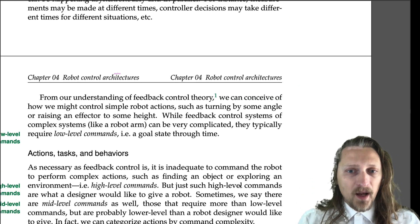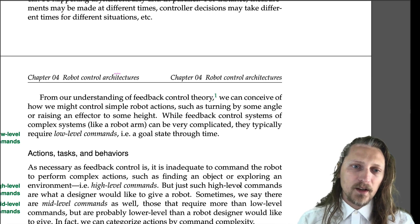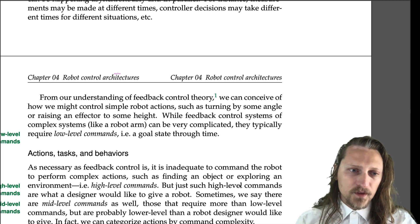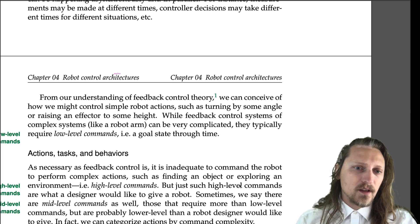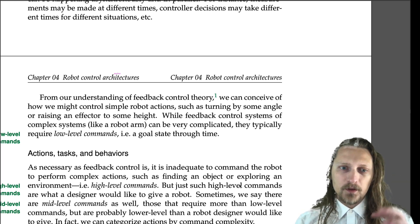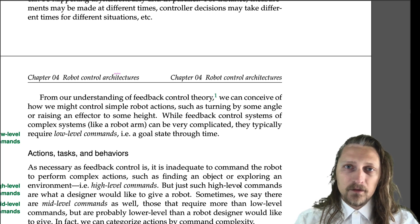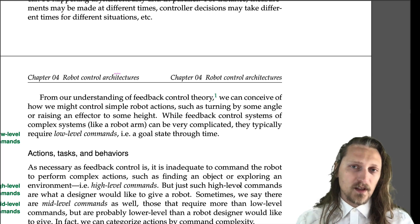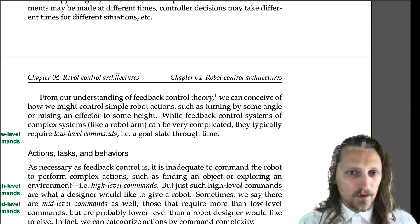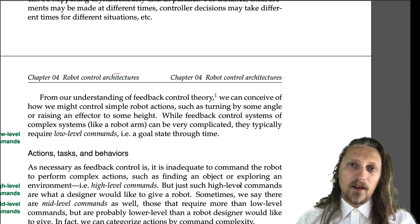From our understanding of feedback control theory, we can conceive of how we might control simple robot actions, such as turning by some angle or raising an effector to some height. While feedback control systems of complex systems like a robot arm can be very complicated, they typically require low-level commands — a goal state through time. For instance, move up to this height, move down to this height. There might be multiple actuators and multiple degrees of freedom involved, yet virtually all of it is commanding to a state. Feedback control systems effectively work by changing the commanded state and then having the control system react to it.